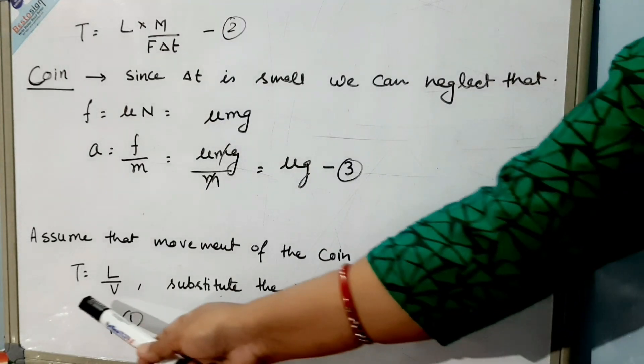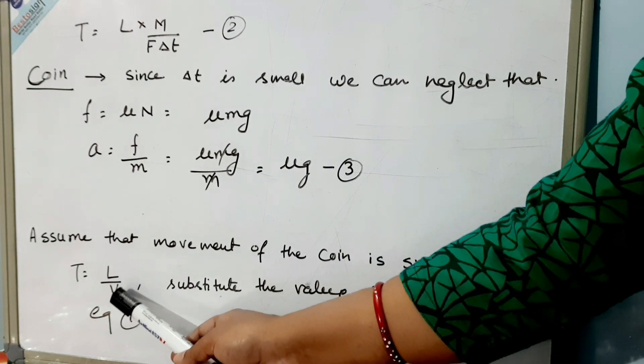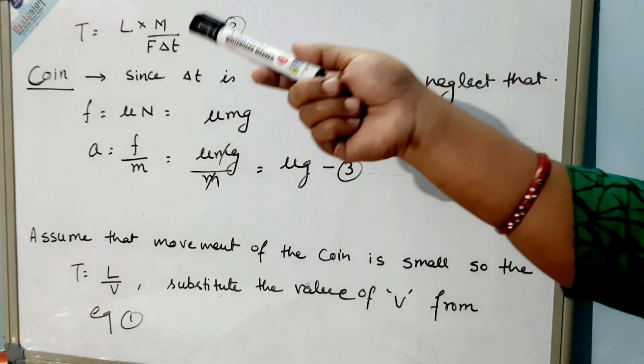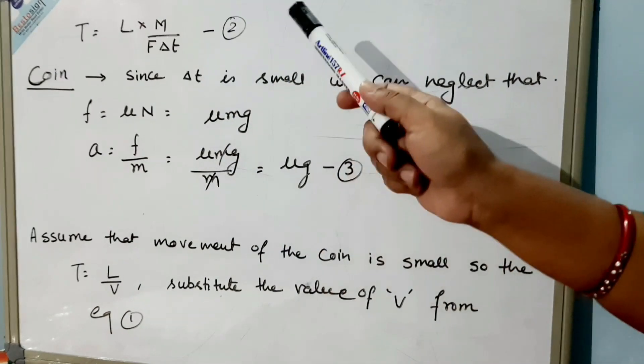Now in this equation, t = L/v. In the place of v, we'll substitute the value from equation 1. That will be t = L·M/(FΔt). So now we'll label it as equation 2. Now we'll come to the case of the coin.